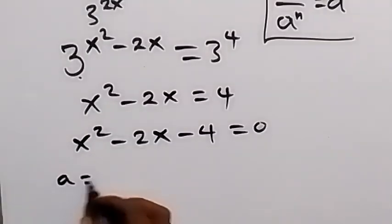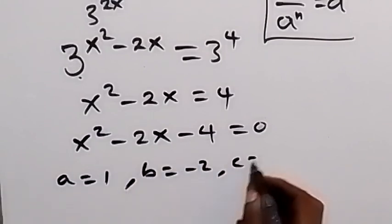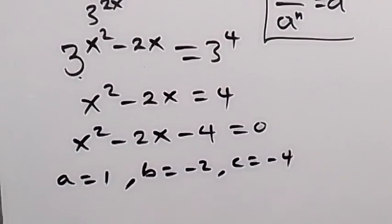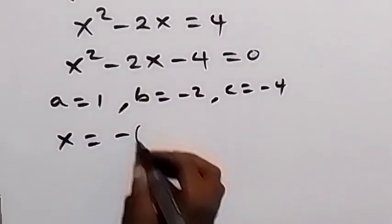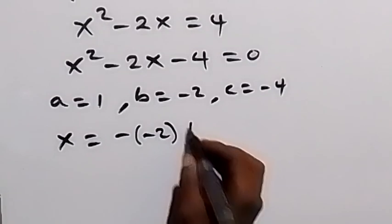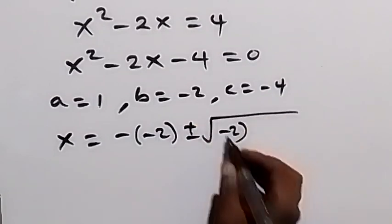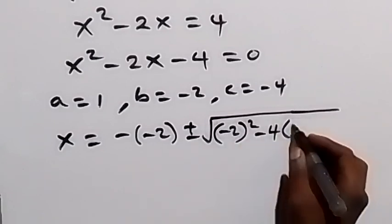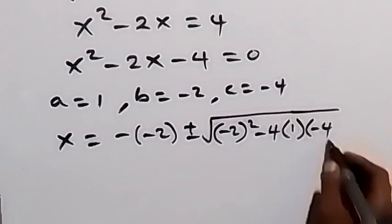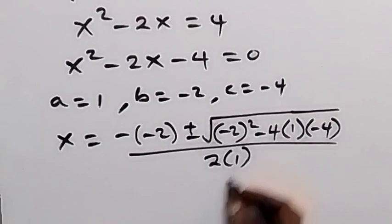Then we can solve this using the quadratic formula. Here, a is 1, b is minus 2, and c is minus 4. Using the quadratic formula, x is minus b plus or minus square root of b squared minus 4ac, all over 2a.